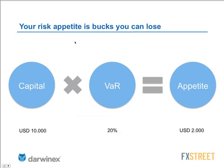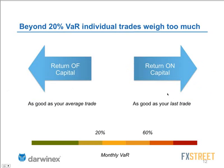The important thing to define before you can get to an optimal position size is how much you stand to lose. For instance, if someone was trading with a value at risk of 20% and had capital of $10,000, then his risk appetite would be $2,000 per month — the product of these two. That's the first thing you should figure out before looking for an optimal position size.